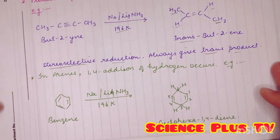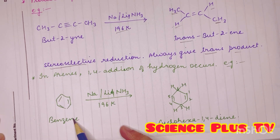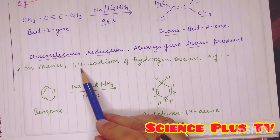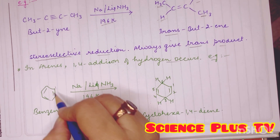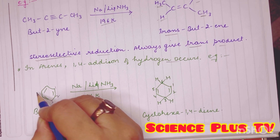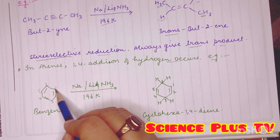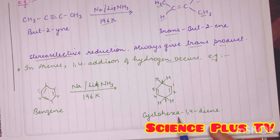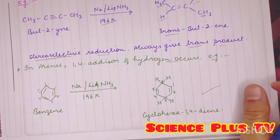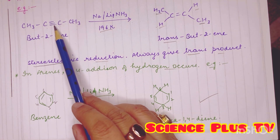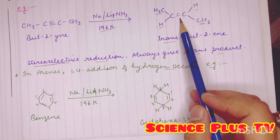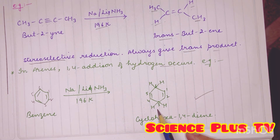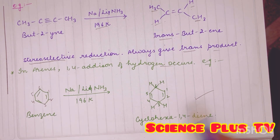In the same case, if we have an aromatic system like benzene and the same reagents are used at the same temperature, we get 1,4 addition of hydrogen. If we give the numbering to these carbon atoms 1, 2, 3, 4, 5 and 6, addition of hydrogen atoms at the 1 and 4 positions takes place. So the system cyclohexa-1,4-diene is produced. Here we have moved from one unsaturated system to another, but the unsaturation is lessened as hydrogen addition occurred — benzene is converted into cyclohexadiene.